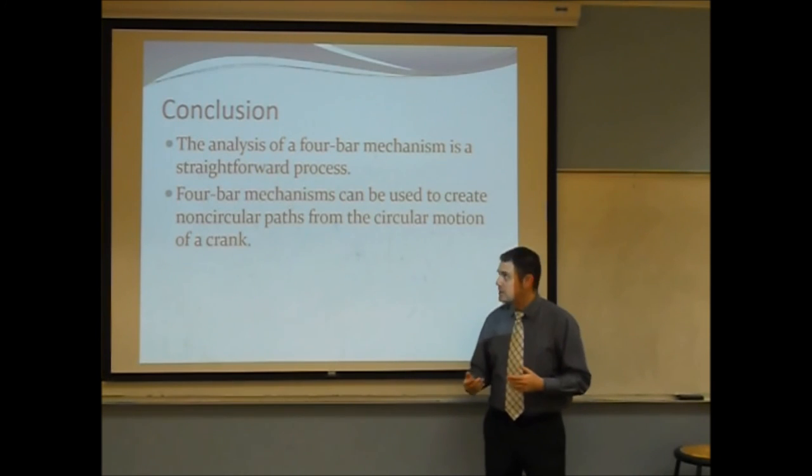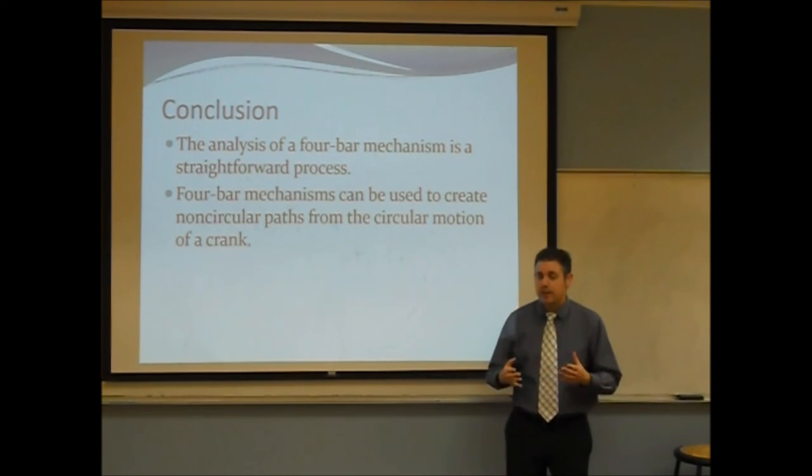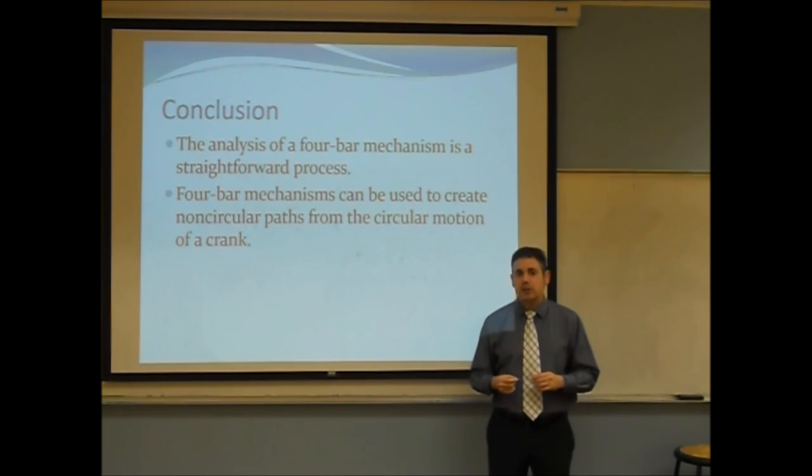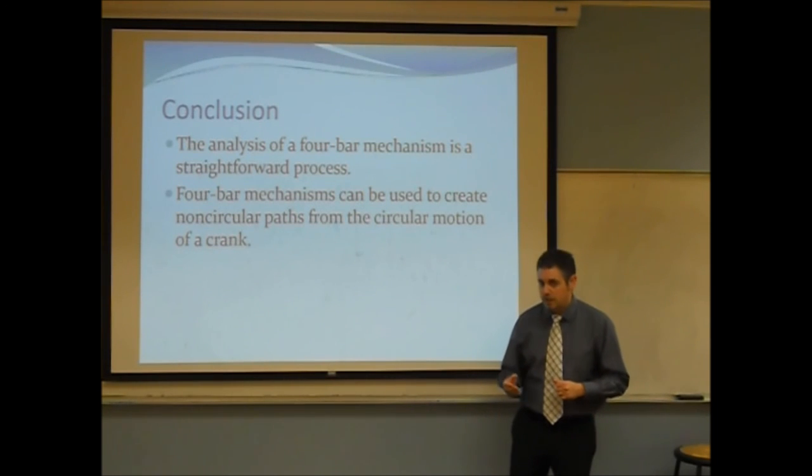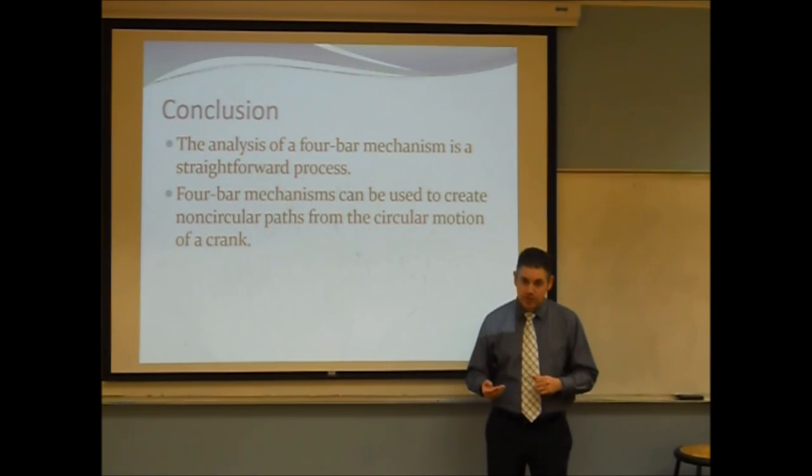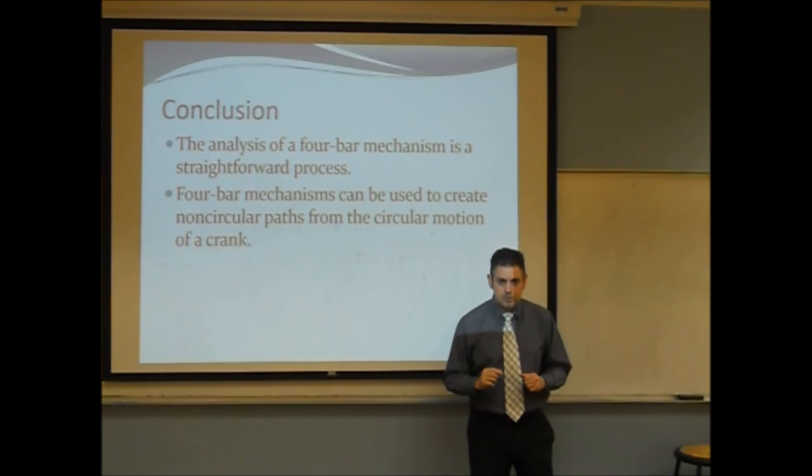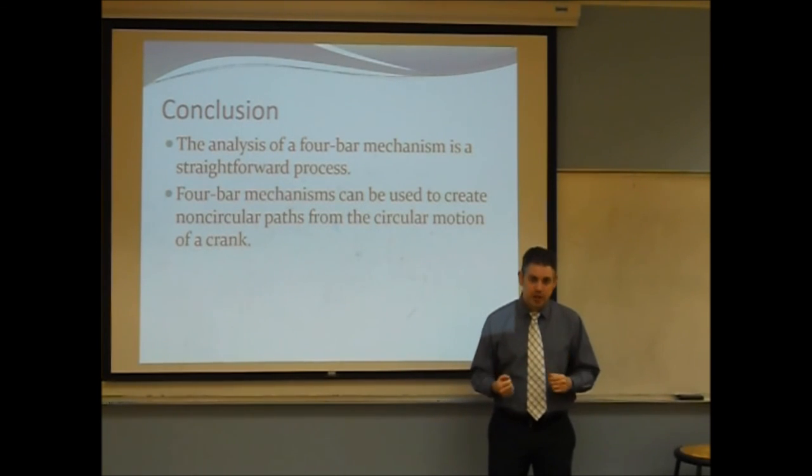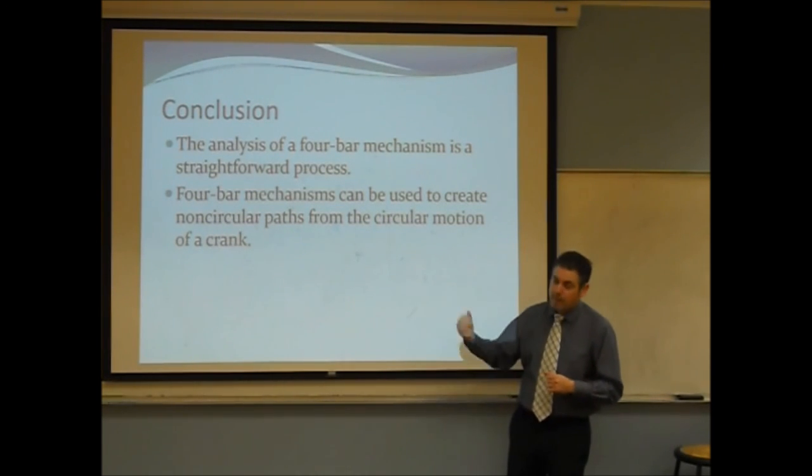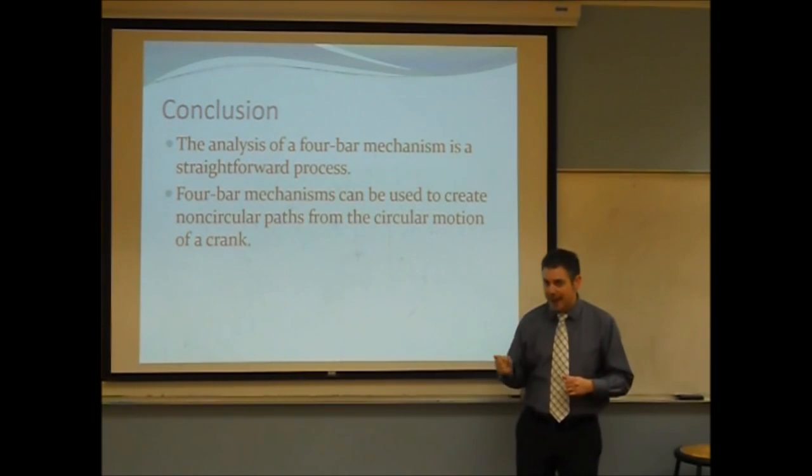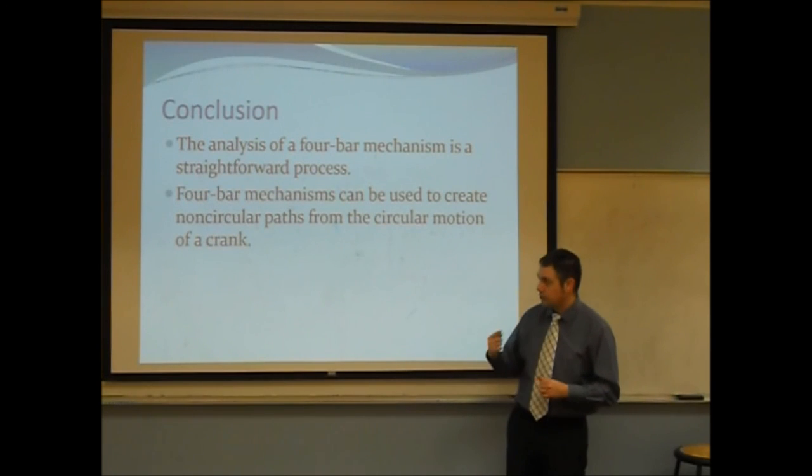So, in conclusion, for the analysis of our four-bar mechanism, we found that it was a rather straightforward process. We really didn't have any problems, except some of our calculations did involve an inverse tangent, and that always resulted in measures between negative 90 and positive 90 degrees. While since the four-bar mechanism does rotate through 360 degrees, we occasionally had to make minor adjustments, adding multiples of 180 degrees. Four-bar mechanisms, as far as applications go, can be used to create non-circular paths, all based on a circular motion of the crank.